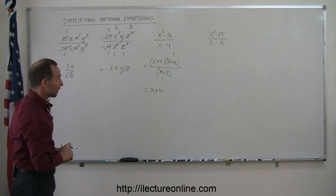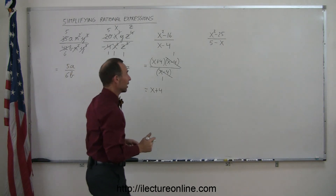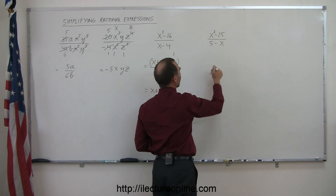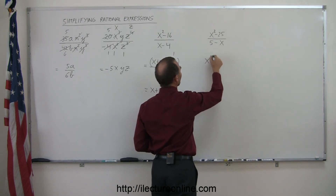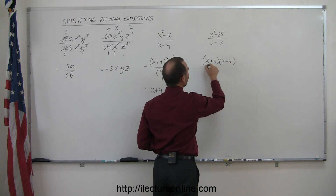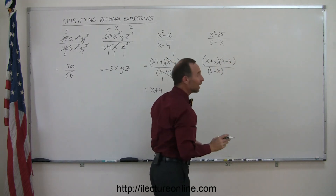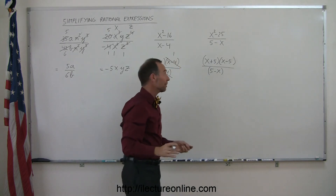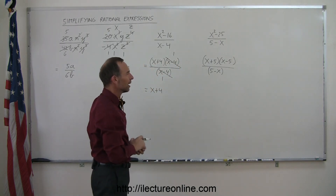Looking at the next problem, it looks very similar, so let's try that. This also looks like the difference of squares, so I can write it as x plus 5 times x minus 5, divided by 5 minus x. Now I must stop, because I don't immediately see something common in the numerator and denominator.